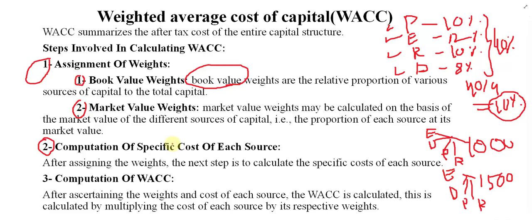The final step is the computation of WACC. We multiply the weights by the specific cost of each source of fund, then sum them all up — and you get the Weighted Average Cost of Capital. Please watch the next video to see how to calculate WACC based on book value as well as market value.